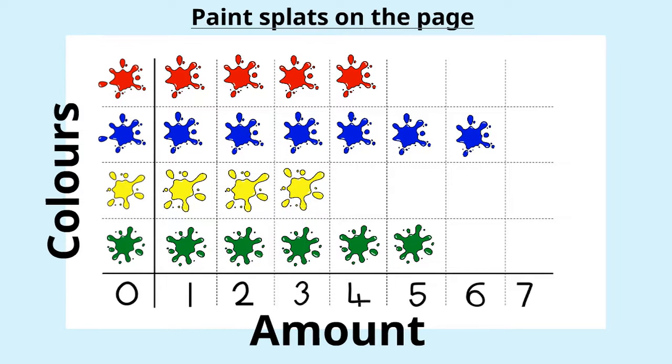A slightly more difficult one. How many fewer yellow splats than green splats are there? Pause the video and write down your answer. Well, altogether we have got five green splats and we have three yellow splats. So the difference between the two is two splats.